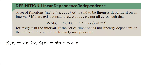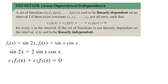Let's take a look at this example. f1 is sine 2x and f2 is the multiplication between sine and cosine. From precalculus, remember that sine 2x is 2 sine x cosine x. Can you find c1 and c2 that makes this linear combination equal to 0? By investigation, we can check to see that negative 1 times sine 2x plus 2 times sine x cosine x is equal to 0.